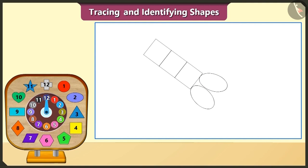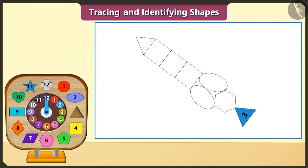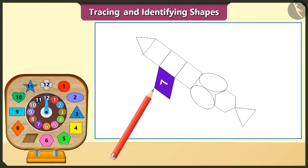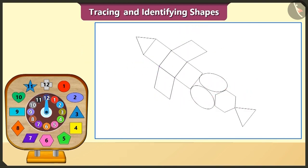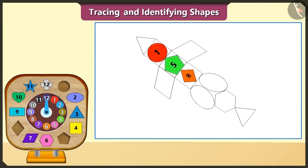Now we will draw a hexagon shape by tracing the hexagon block under these two ellipses. Now we will trace this triangle block and draw two triangles like this. Now we will take the quadrilateral block and trace it to draw two quadrilaterals. Now look at these blocks — this is a circle, this is a pentagon, and this is a rhombus.